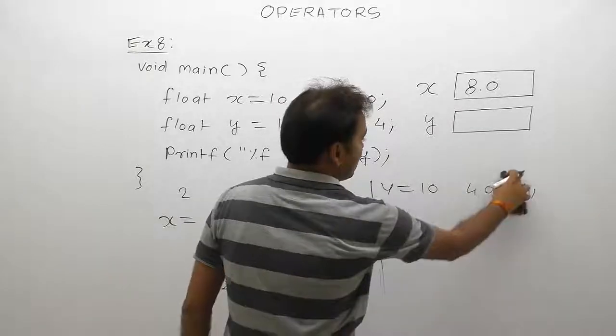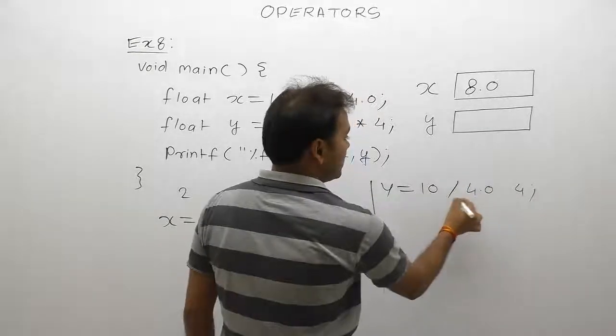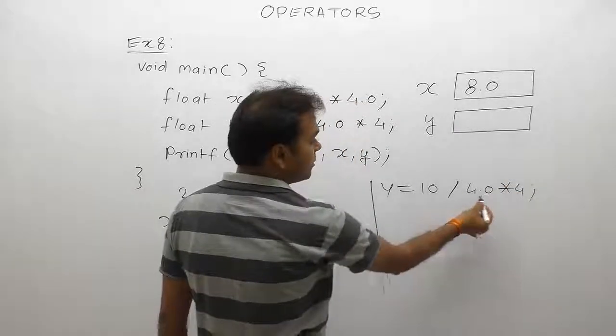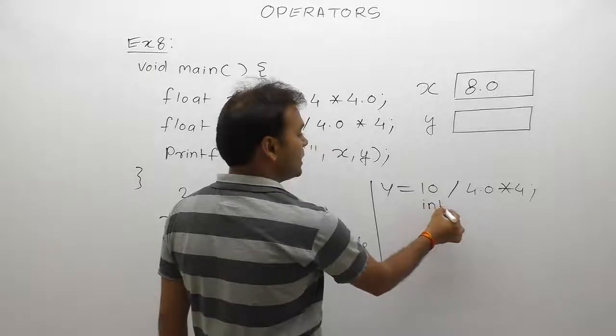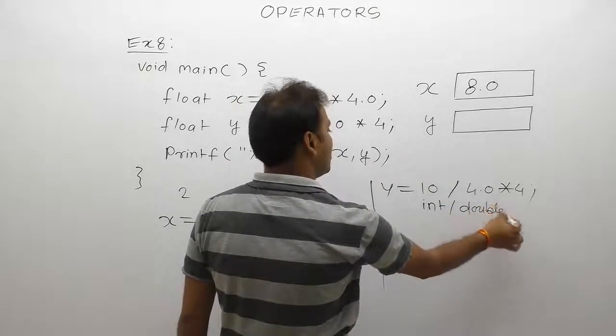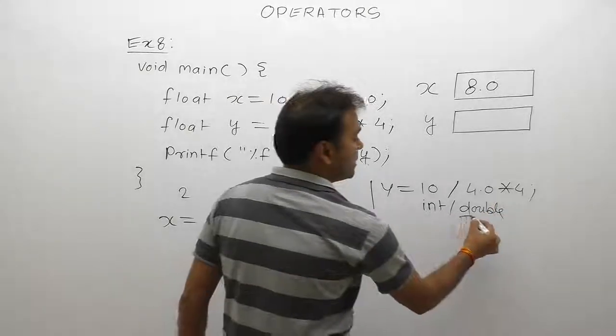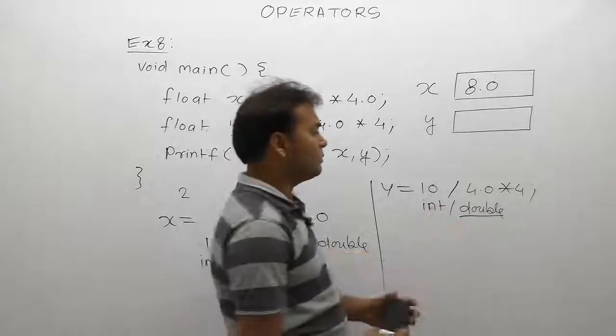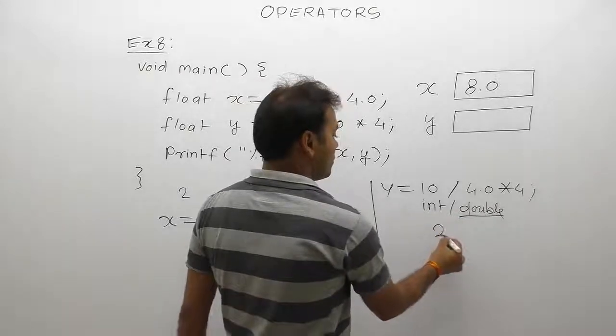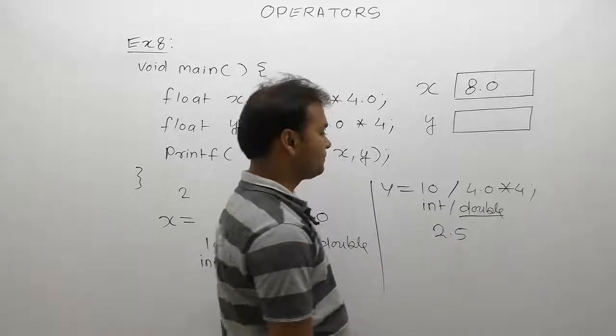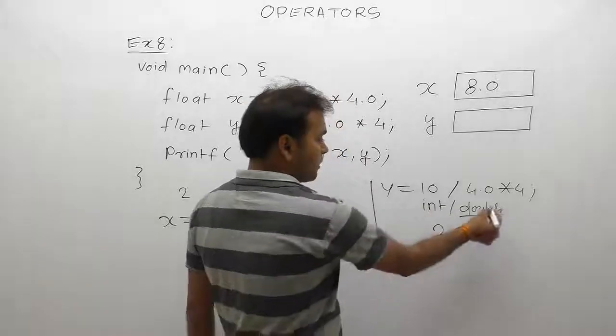First of all, multiplication then division. For multiplication, first operand is integer, second operand is double. Type of result is also double. Result can be represented as double, which is 2.5. 2.5 in double can be represented, so decimal part is not discarded.